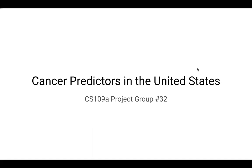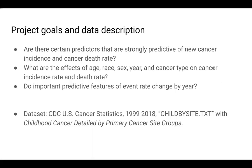Hi everyone, we're project number 32 and our project is on cancer predictors in the United States. We'll work with the U.S. CDC cancer statistics dataset, which includes data from 1999 to 2018. We'll be using the file childbycite.txt, which has childhood cancer detailed by primary cancer site groups information.